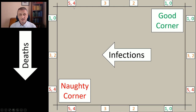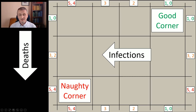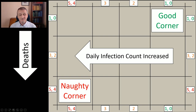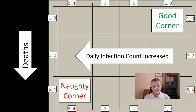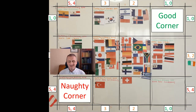It's the same with deaths — the higher number of deaths is in the lower left and the lower numbers upper right. So the naughty corner down here: if four or five of the last five days infections increased and deaths increased, you're down here. The good corner: if in the last five days you've had zero or one greater days of infections and deaths, you're up here. Daily infection count increased five or four puts you in this column, three here, two here, one or zero in the last column. Daily death count increased — bad down here, good up here.